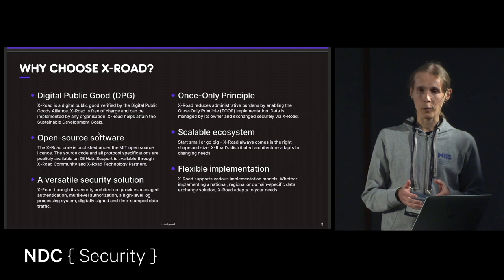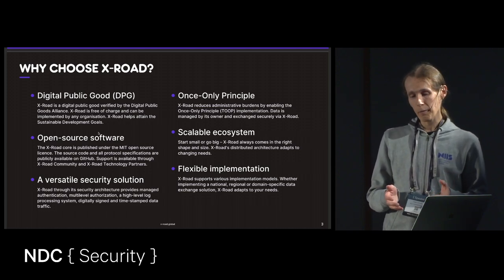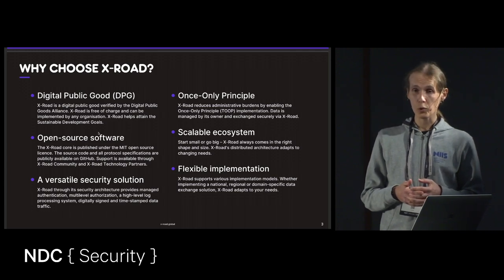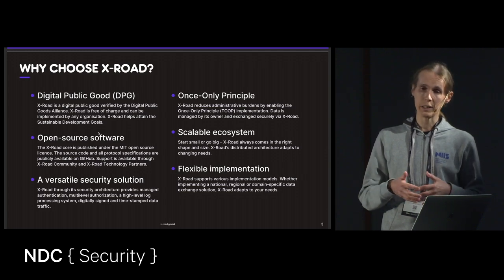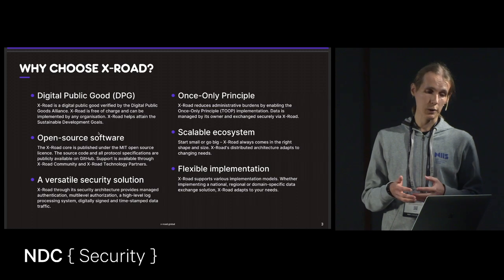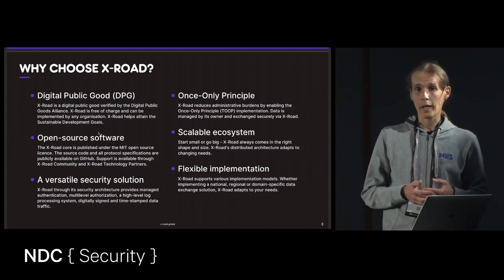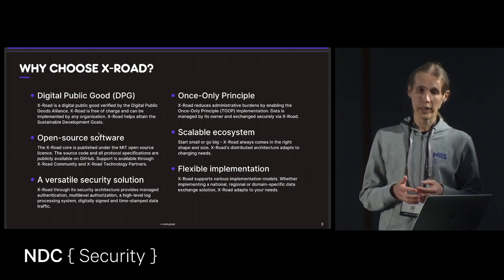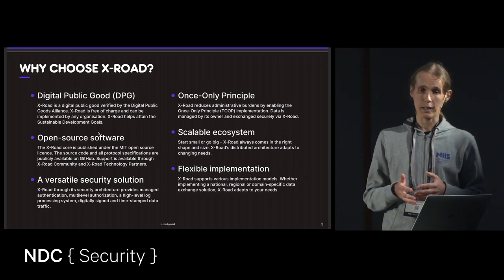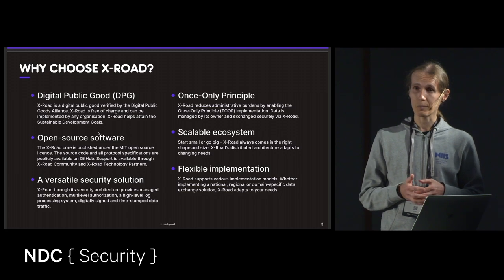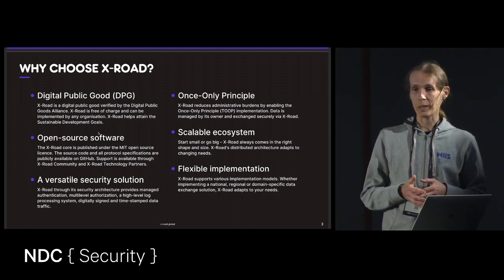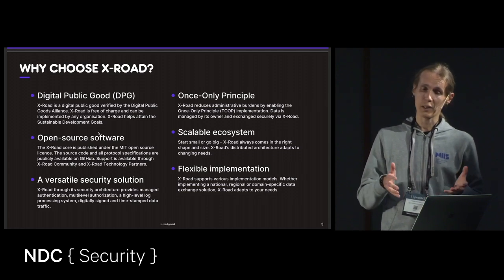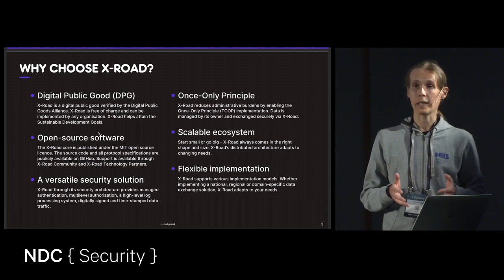The most typical way to deploy XROAD is to have one national XROAD ecosystem where all public authorities, private companies, and other organizations can join — as has been done in Estonia and Finland. But for federal states, another model is that different states can independently deploy their own XROAD ecosystems, which can then be connected. It can also be that states use different data exchange solutions — some using XROAD, some using something else.